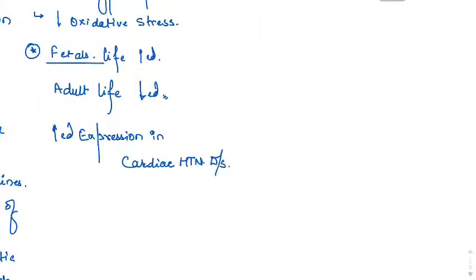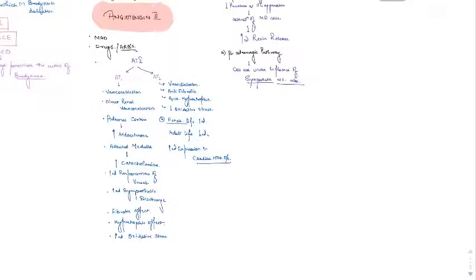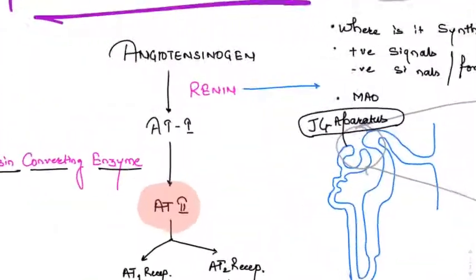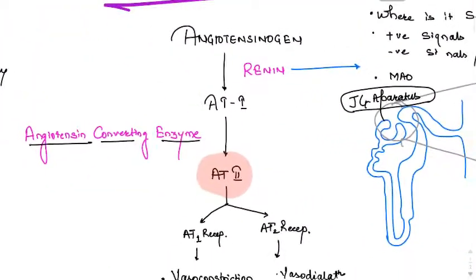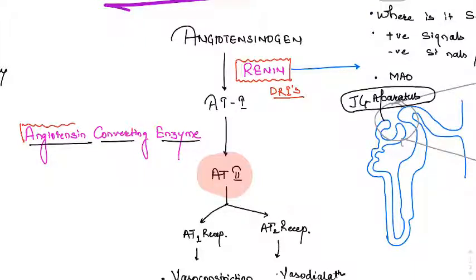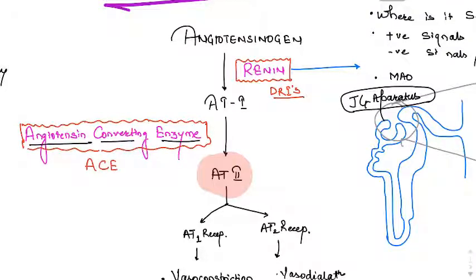The drugs which act on the renin-angiotensin system include: direct renin inhibitors (DRI), drugs that act on the angiotensin-converting enzyme known as ACE inhibitors, and angiotensin receptor blockers (ARBs), which block the receptors where angiotensins act.